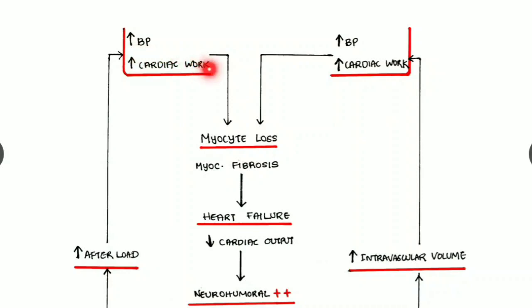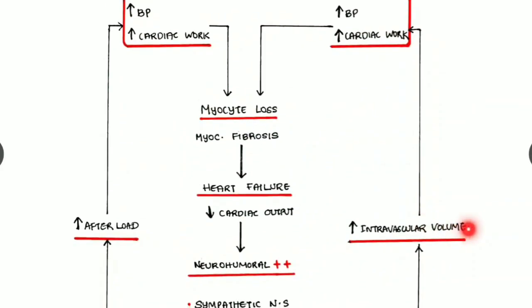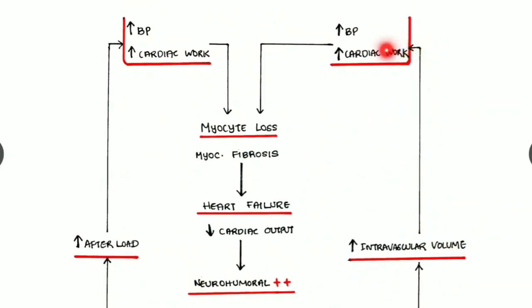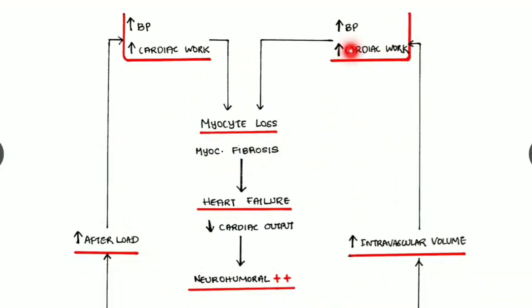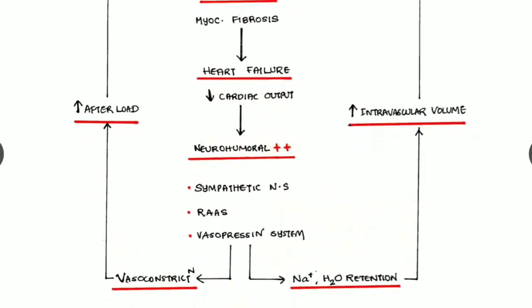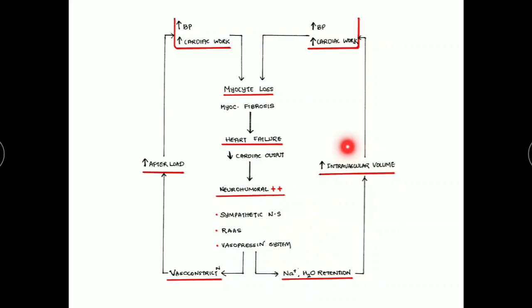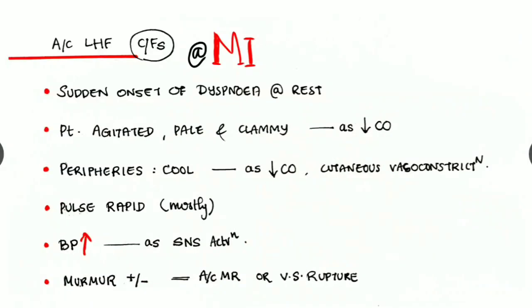The increased afterload causes increased blood pressure and cardiac workload, again causing myocyte loss and myocardial fibrosis. This activation also causes sodium and water retention, raising intravascular volume, which increases blood pressure and cardiac workload, and the cycle repeats — forming a vicious cycle leading to severe heart failure and even death.